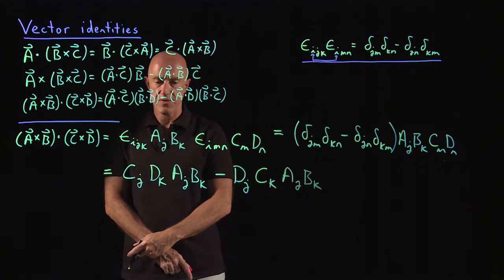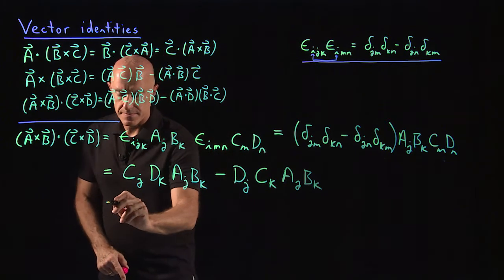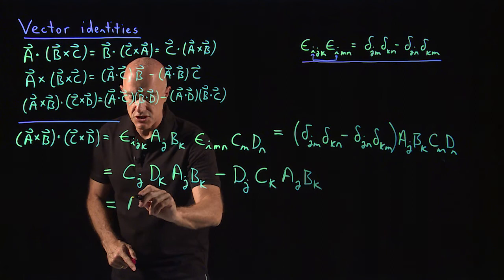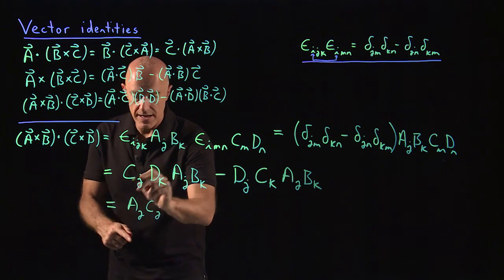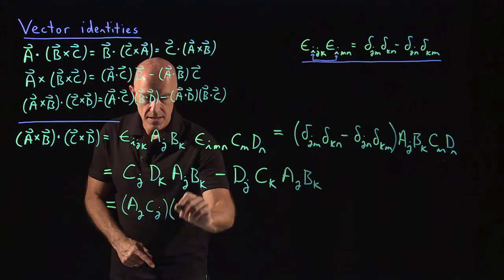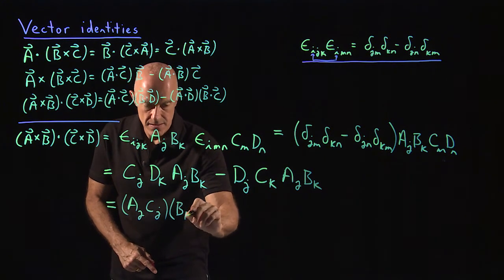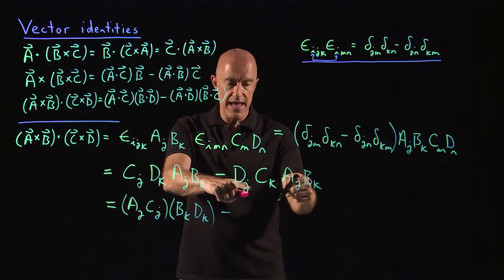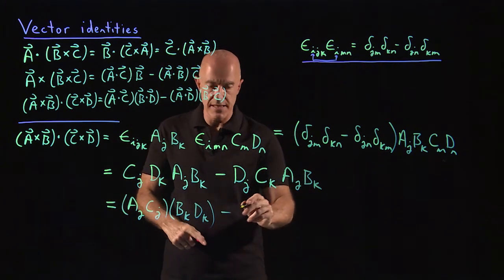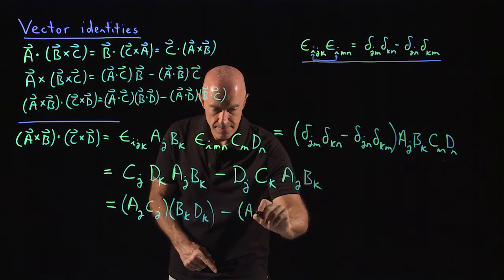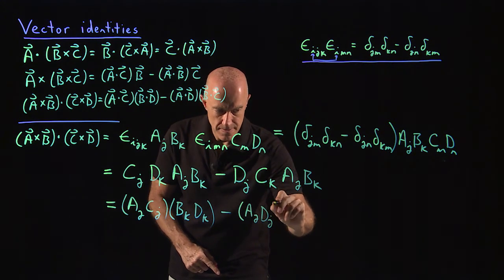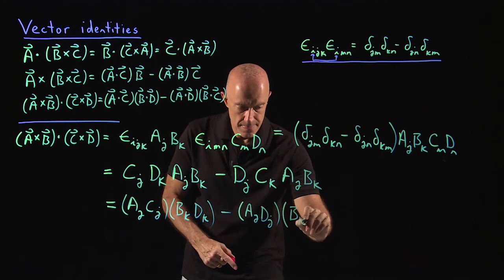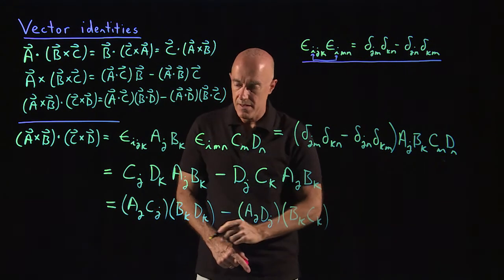Almost there, almost there. We ought to group these things. So a_j c_j, right? a_j c_j. And we have a b_k, d_k. And then here we have an a_j d_j. And here we have a b_k c_k.